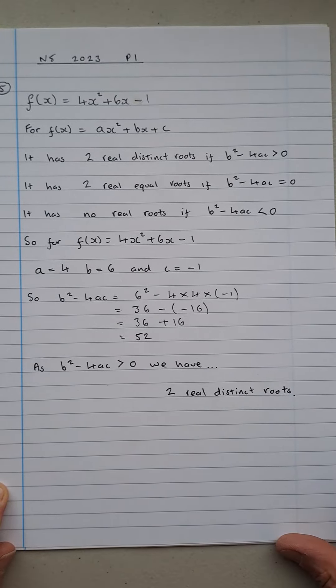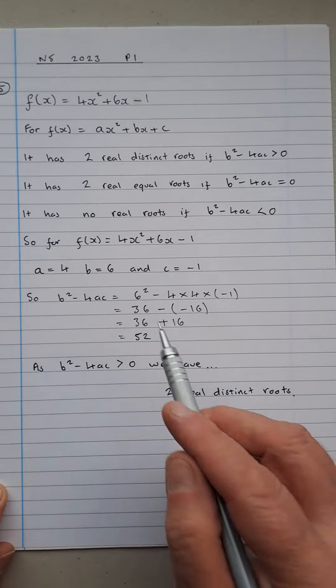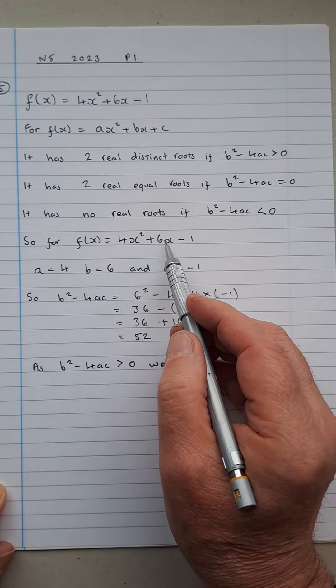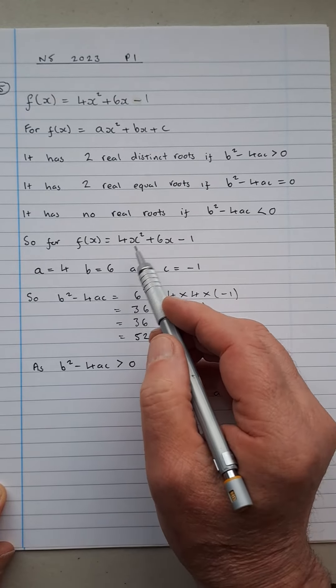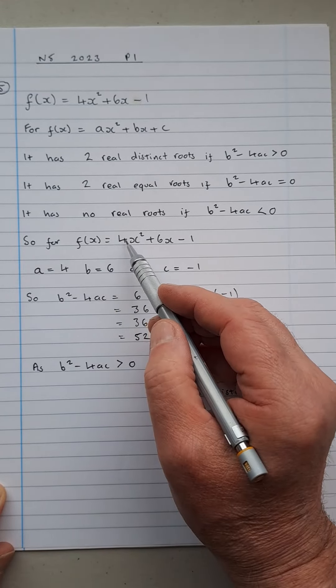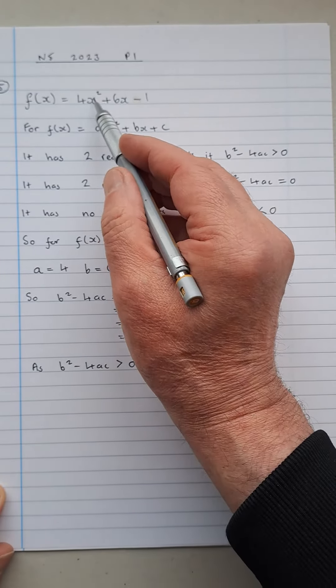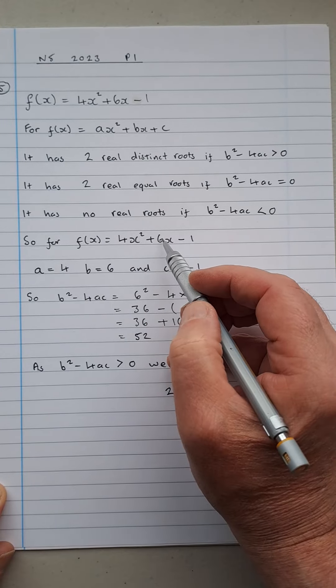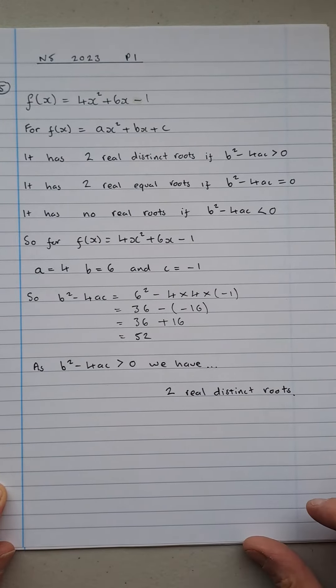So this is all about finding the discriminant. For f(x) = 4x² + 6x - 1, let's put numbers for letters here. So a equals 4 because it's 4x², b equals 6, and c equals -1.